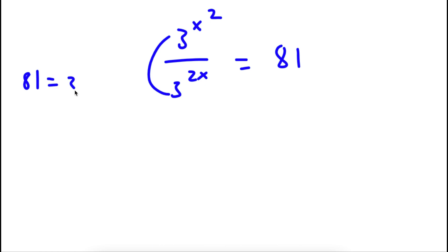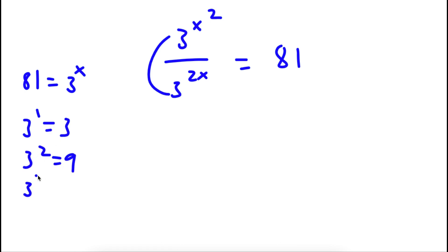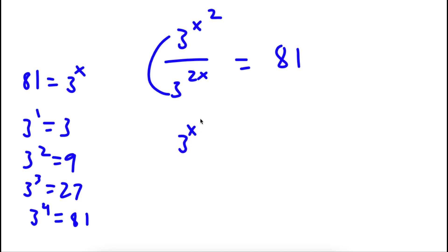Meaning, 81 — this is equal to 3 to the power of what? Well, 3 to the power of 1 is 3, 3 to the power of 2 is 9, 3 to the power of 3 is 27, 3 to the power of 4 is 81. So I'm going to change 81 to 3 to the power of 4. And now all our terms have a base of 3.